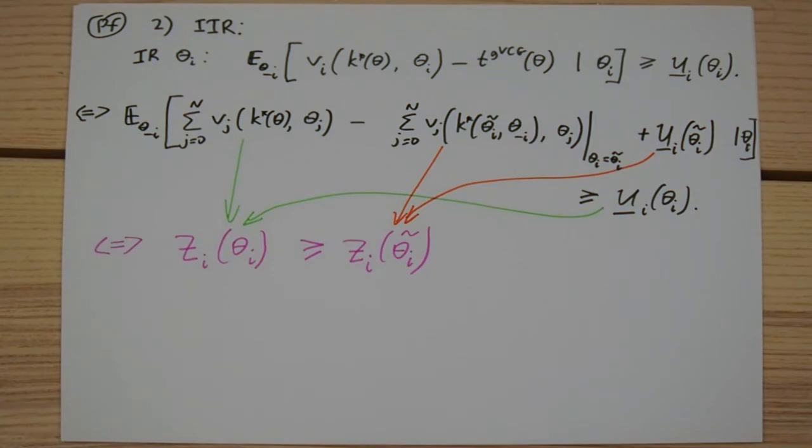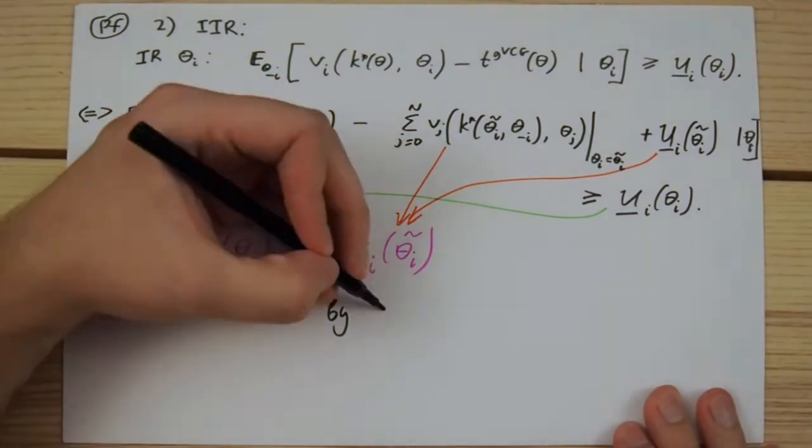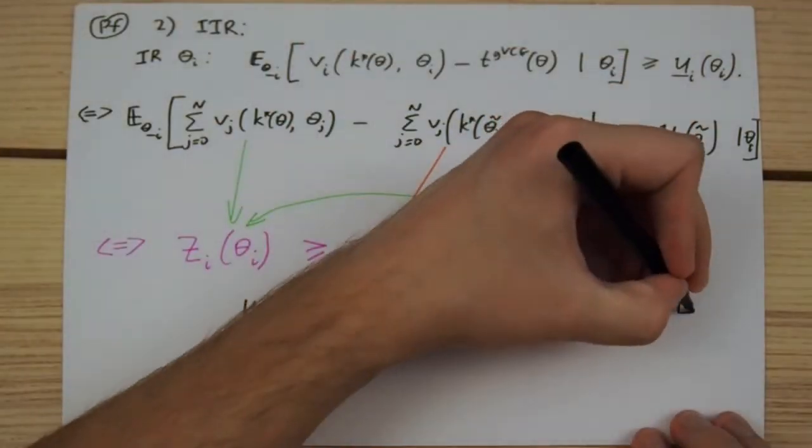Which means that the interim IR constraint for our arbitrary player and their type holds as well. This concludes the proof.